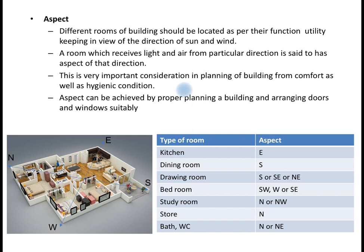For example, some components of a building may not need early morning sunlight, while others will. For example, the kitchen should possibly be provided in the eastern portion of the building so that it gets early morning sunlight. This acts as a disinfectant — the natural effect of sunlight does the work. Early morning sunlight is better for the kitchen area, whereas the dining area is better provided in the southern direction.